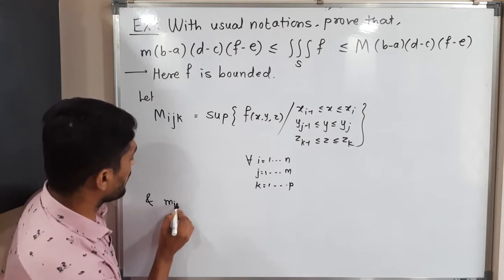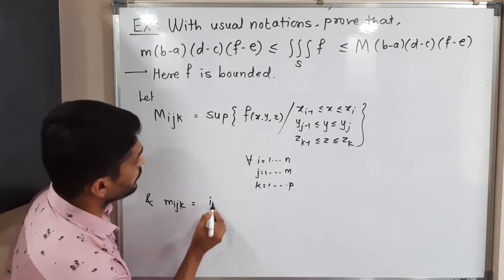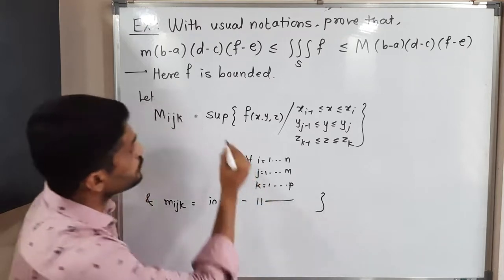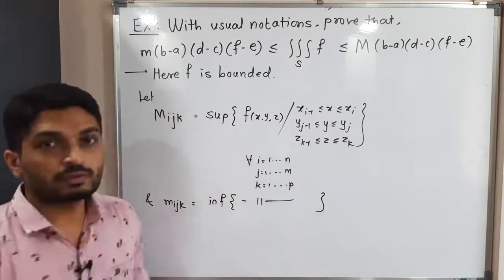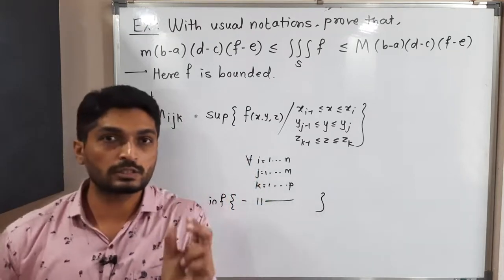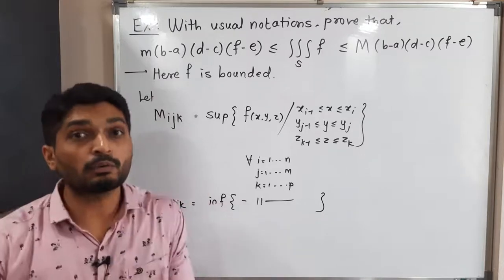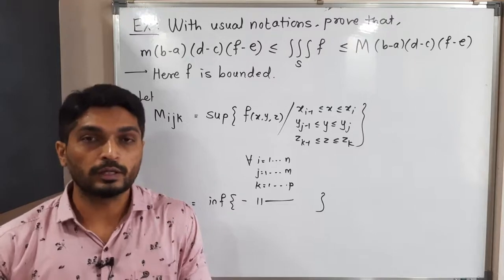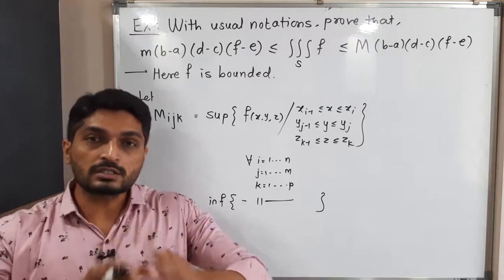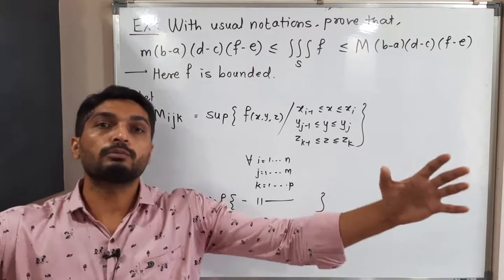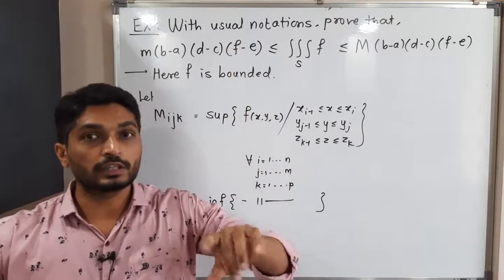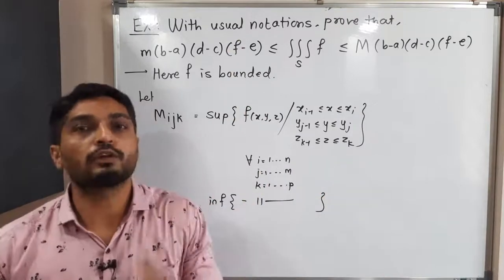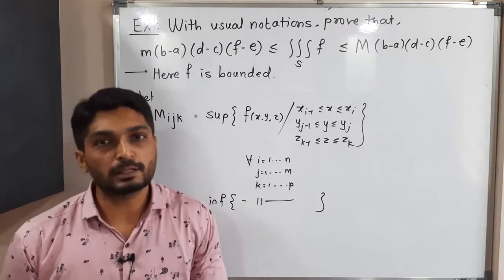Similarly, we define the infimum over each subcuboid as m_ijk — the remaining part of the definition is the same. So M_ijk is the supremum over each subcuboid and m_ijk is the infimum over each subcuboid. Over the entire cuboid there will also be some maximum and minimum values of the function.